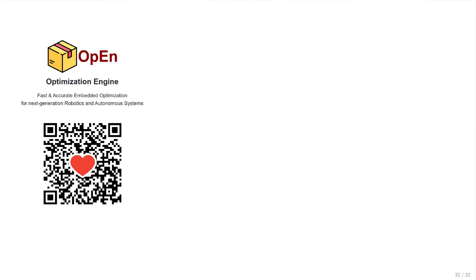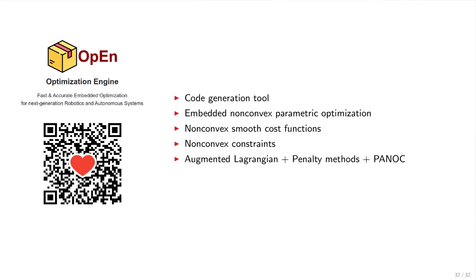In conclusion, this talk was about OPEN, a free open-source code generation tool for embedded non-convex parametric optimization. OPEN can handle non-convex smooth cost functions and non-convex constraints by combining the augmented Lagrangian and penalty methods, as well as PANOC. And with that, I would like to thank you very much for your attention.